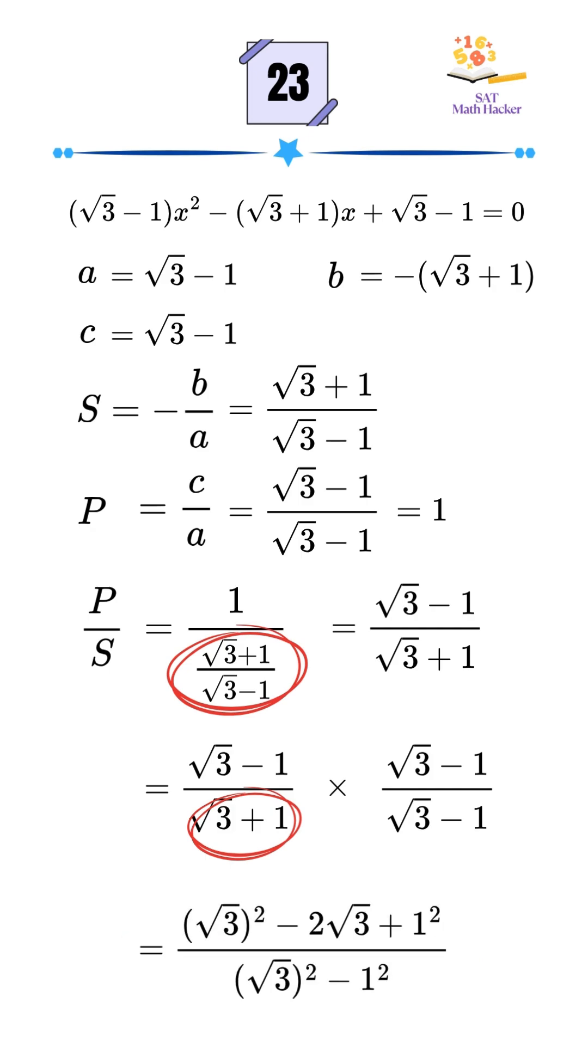That gives us square of square root of 3 minus 2 times square root of 3 plus 1, divided by square of square root of 3 minus 1 squared.